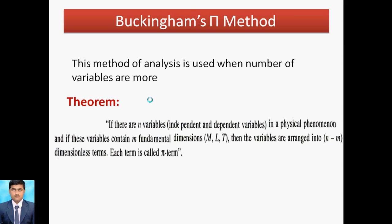First, let us look at Buckingham's theorem. If there are n variables — independent as well as dependent — in a physical phenomenon, and if this contains m fundamental dimensions, that means M, L, T (M for mass, L for length, T for time), then the variables are arranged into n minus m dimensionless numbers. Each term is called a pi term. So if there are n variables and m fundamental dimensions, we can arrange them into n minus m dimensionless numbers. These dimensionless terms have no unit and are called pi terms.